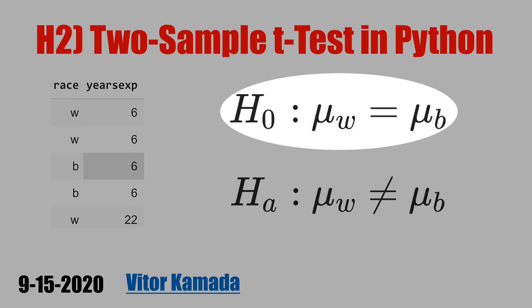The null hypothesis is the average years of experience of white people equals that of black people. See that this is a two-tail test. See the equality, and in the alternative hypothesis, this inequality.